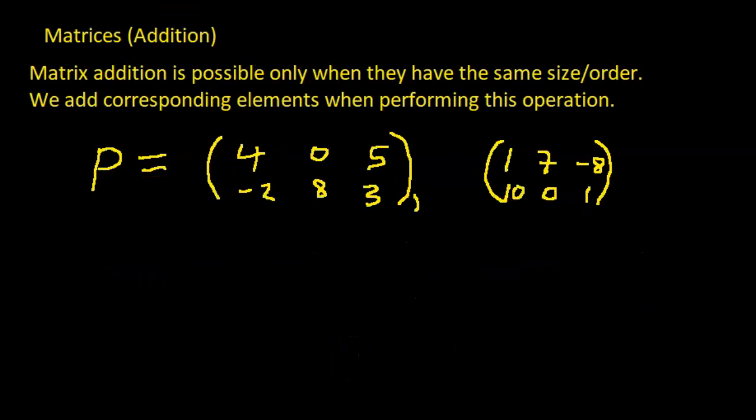So P equals that and Q equals to that. Now we are asked to find P plus Q. So P plus Q. Now can we add these two matrices? So we need to check first if they have the same size, same order. What type of matrix is this? We have 2 rows and 3 columns, so this is what we call a 2 by 3 matrix.